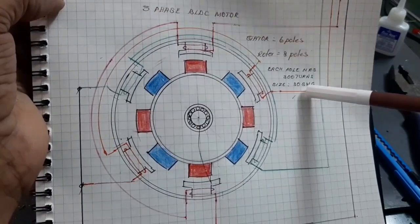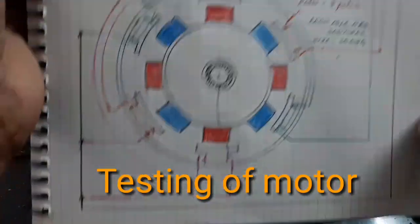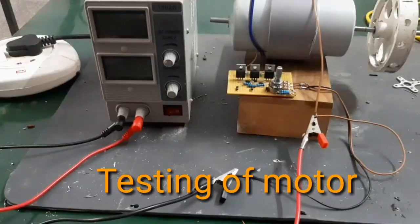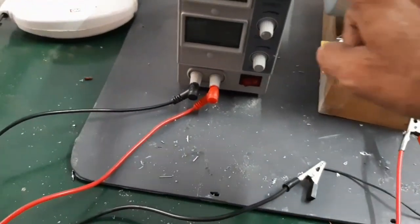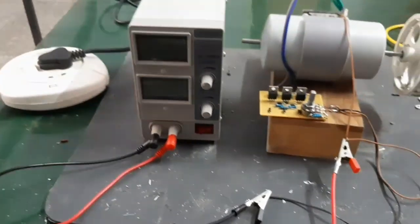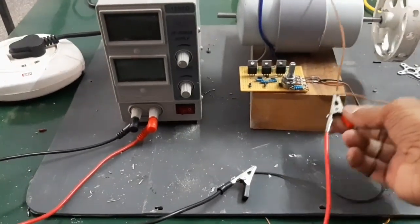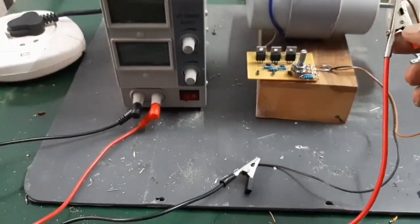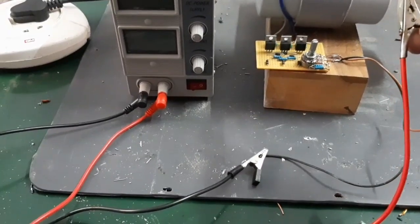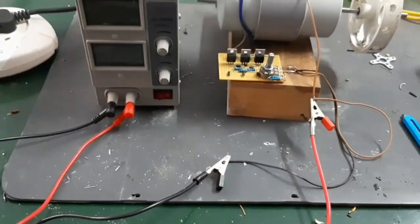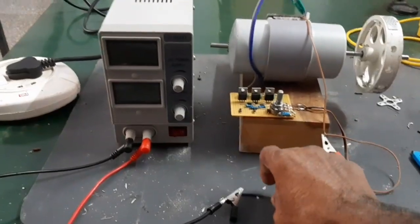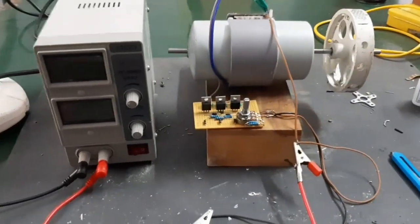Now, I am going to test the motor. Here, look at this. This is the regulated power supply. The positive end is given to the motor. One lead to the motor and another one lead to the PCB board. Here, this is the neutral. Now, I am going to start the motor.